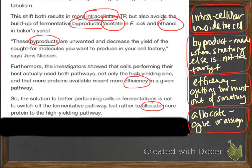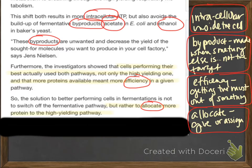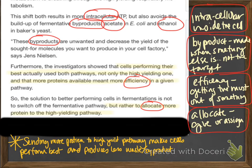The same process again: I pre-read, I circled words that I thought might be problematic, I looked them up in multiple dictionaries, and I read the Wikipedia article on a few, because I really want to make sure I understand what these words mean or I can't make any sense of the article. I've gone ahead and highlighted what I feel like are the main ideas: cells performing their best used both ways, not just the high-energy one, and that more proteins available meant there was more efficiency in a pathway. So they said that the big deal was getting cells to direct more protein to the high-yielding pathway. My summary: sending more protein to the high-yield pathway makes cells perform best and produces less waste or byproducts.